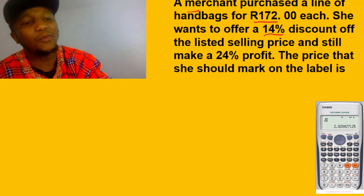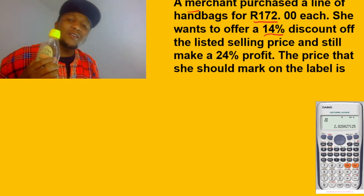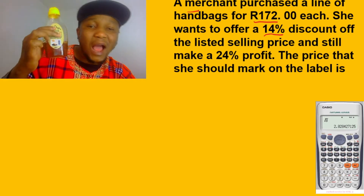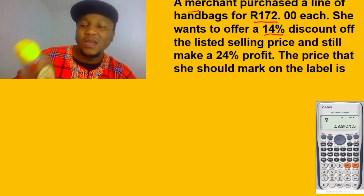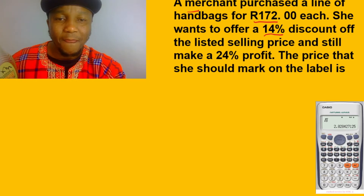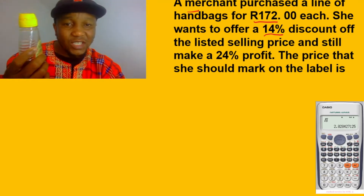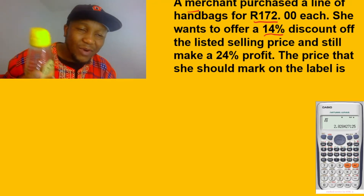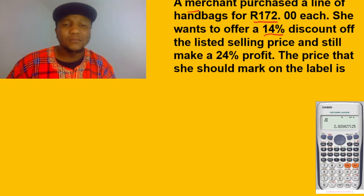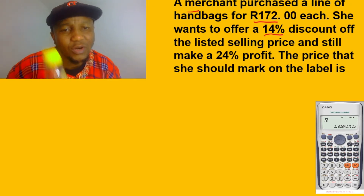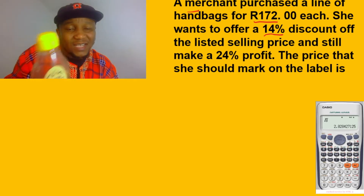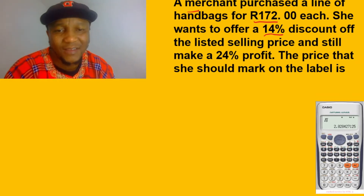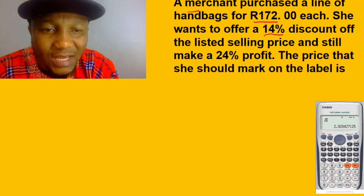For example, I'm buying this honey — I'm a big fan of honey — for 172. She wants to offer a 14% discount off the listed selling price. Do you know the listed selling price? No, you don't. You only know the buying price, which is 172. So first and foremost, let's find the listed selling price.